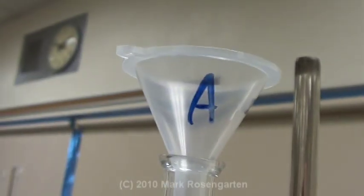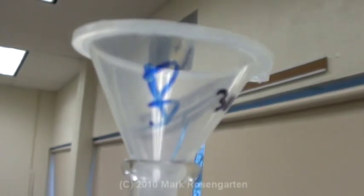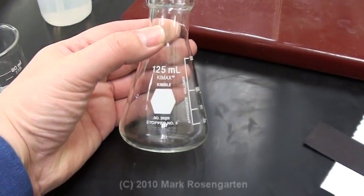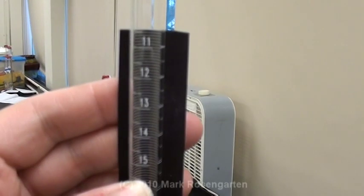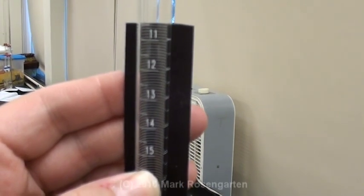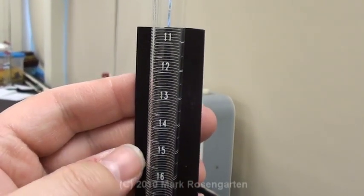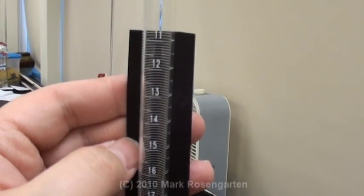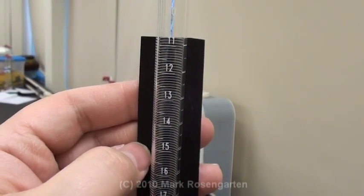Two funnels, one labeled A for acid, the other labeled B for base. A 125 milliliter Erlenmeyer flask, a white piece of paper to improve contrast when you put it on the ring stand, and a black piece of paper to help improve contrast when you read the numbers off the burette. Without the black piece of paper. With the black piece of paper. Look at that incredible difference.